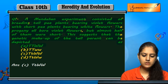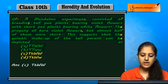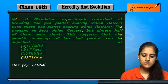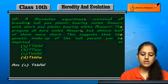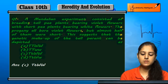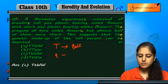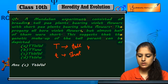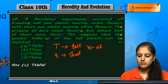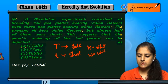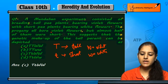The options are: A is TTWW, B is TT small w and small w, C is T small t WW, and D is T small t W small w. Here, capital T means tall, small t means short, capital W means violet color, and small w means white.